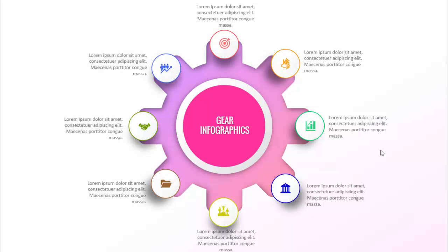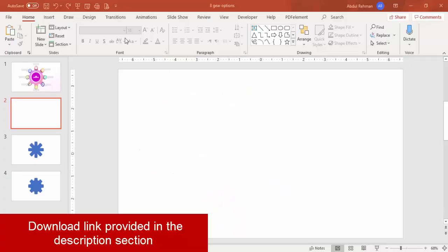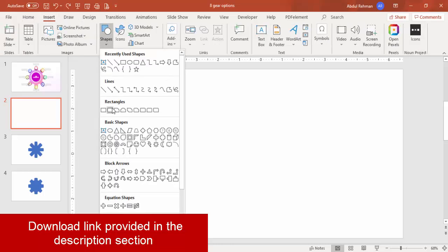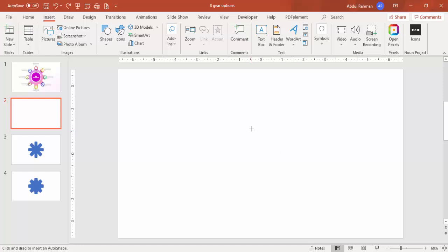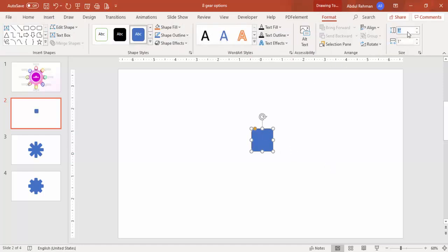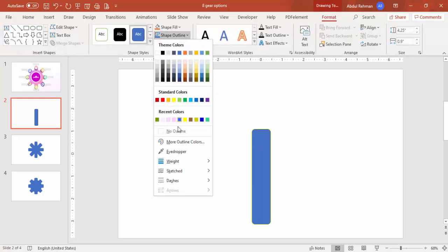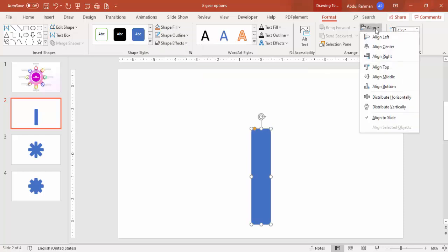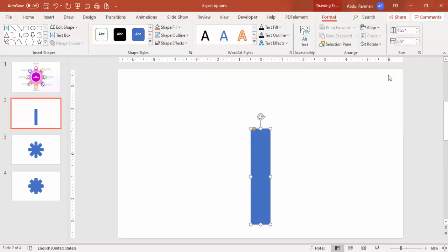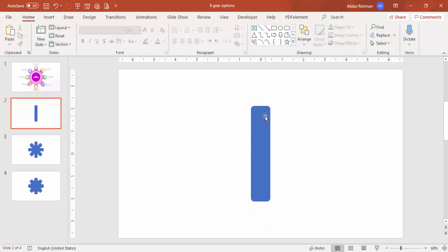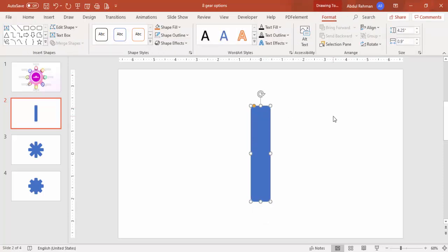Let's see how to do this in PowerPoint. Add a new slide, go to Insert > Shapes, and select a rounded corner rectangle. Click it and make the height 4.25 and the width 0.9. Then set the shape outline to no outline, go to Align > Center Align > Middle. Duplicate the object by pressing Ctrl+D, then align center and middle again.